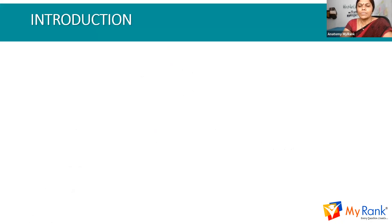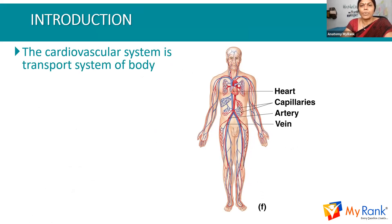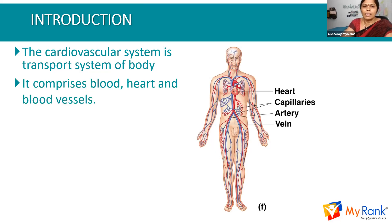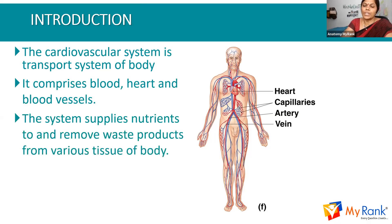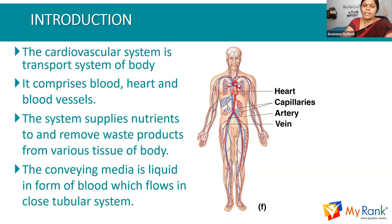We can see the arteries and veins of the whole body beautifully. The main components here are the heart and the capillaries, arteries, and veins. It comprises mainly the blood, heart, and blood vessels — these are the main components of the vascular tissue. This system supplies nutrients to the body and also removes waste products from various tissues. The conveying medium is liquid in the form of blood, which flows in a closed tubular system, where the vessel is a tube-like structure.